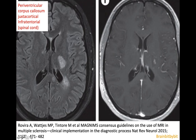This is a FLAIR image of a patient with multiple sclerosis showing lesions periventricular and in the corpus callosum, and a lesion with a periventricular orientation that enhances on the post-contrast T1-weighted image.